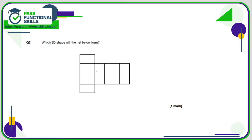Question number two: which 3D shape will the net form below? Here we have a net made up of rectangles. If we make a fold here and here and call this the front, then this will be the top, this will be the base. Another fold here — this will be the right-hand side. Another fold here — this will be the back. And another fold here — this will make the left-hand side of a cuboid.